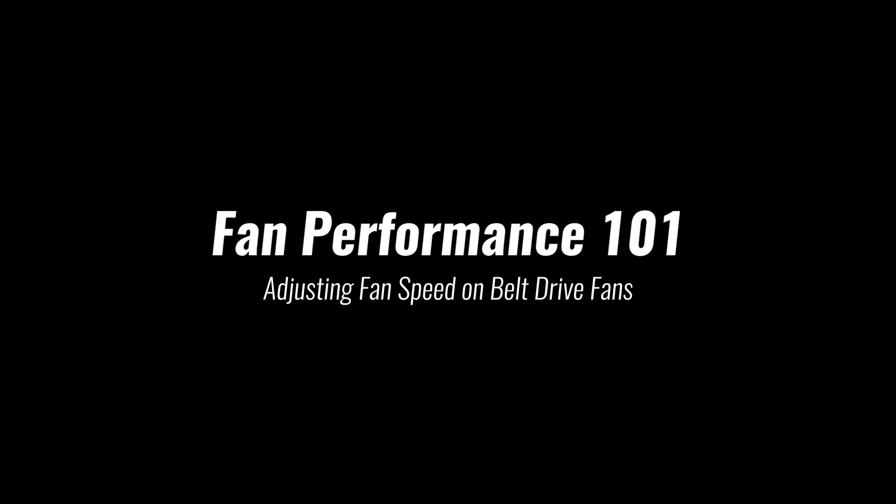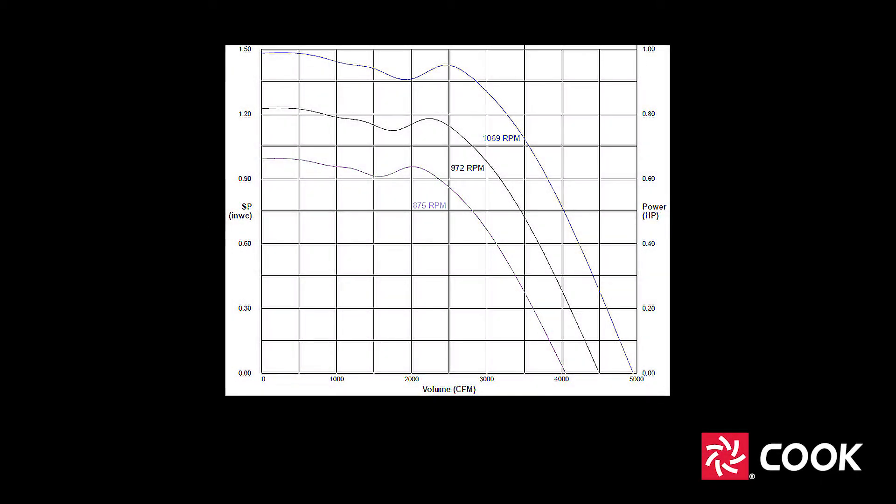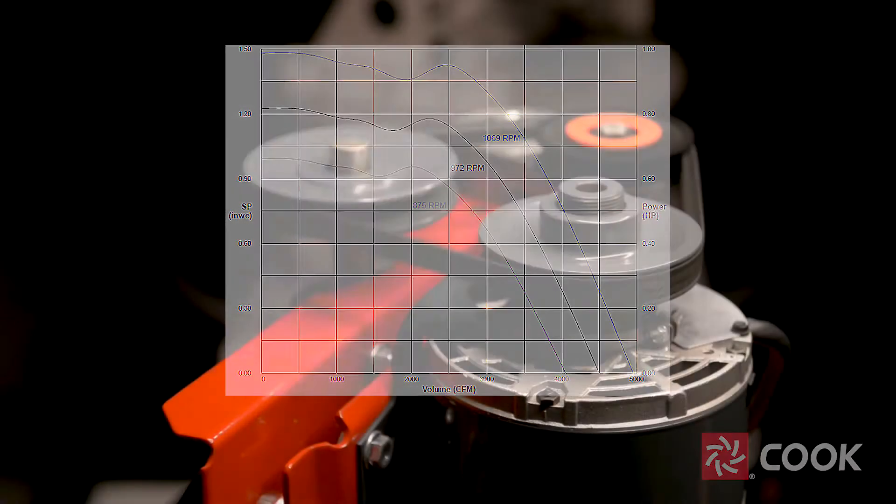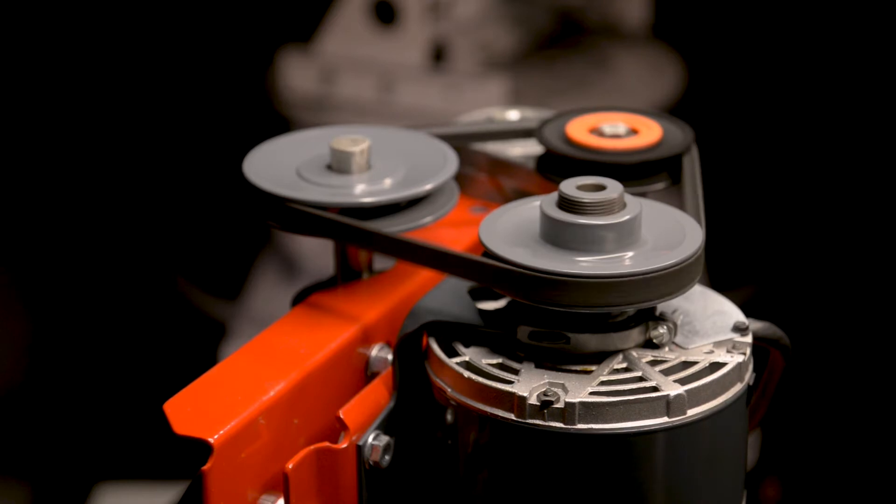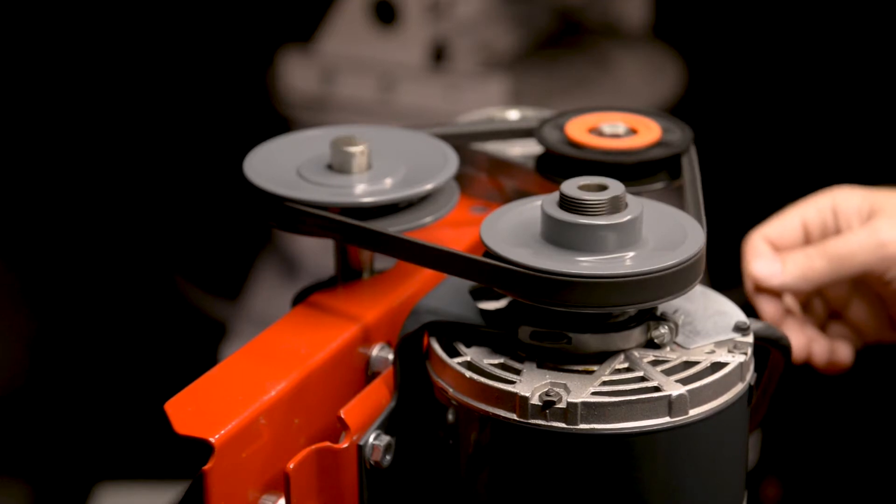Fan speed, how fast the fan impeller rotates, is a key factor affecting fan performance. As you can see from this typical performance fan curve, as the speed increases the fan is able to deliver more airflow and develop more pressure. The fan speed here is indicated as fan RPM or revolutions per minute. Understanding how to set or change fan speed for a belt drive is an essential part of ensuring proper fan performance. Let's see how this works.